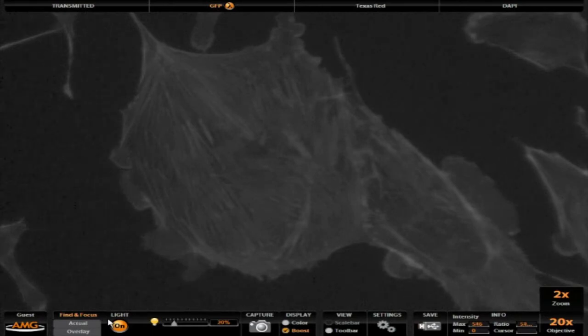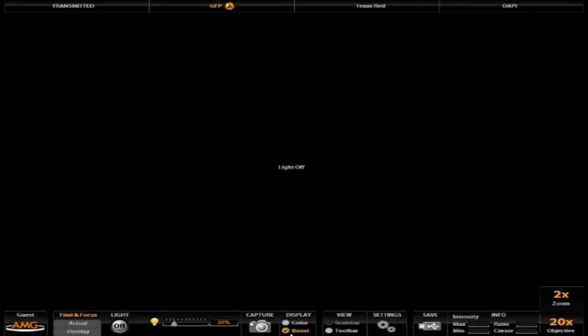When you're ready to capture an image, turn the light off, turn Boost off, and then move the intensity slider back to 70%. Then click Capture.